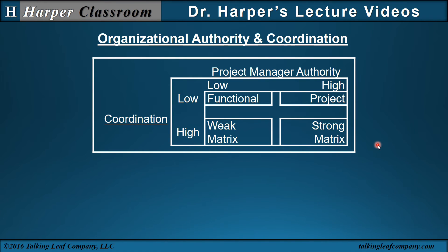For organizational authority and coordination: low authority and low coordination for the project manager corresponds to mostly functional project management. Very high project manager authority and high coordination is a strong matrix. The most project manager authority is in the project management structure. And the weak matrix has low authority but high coordination.